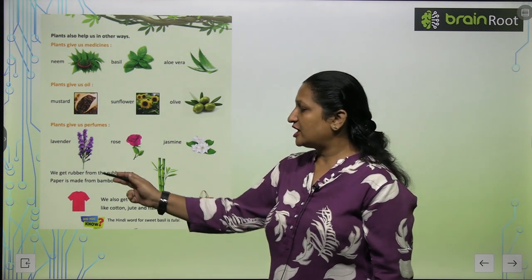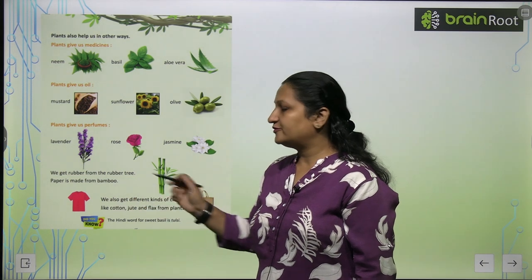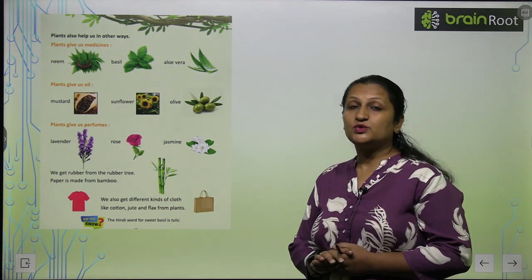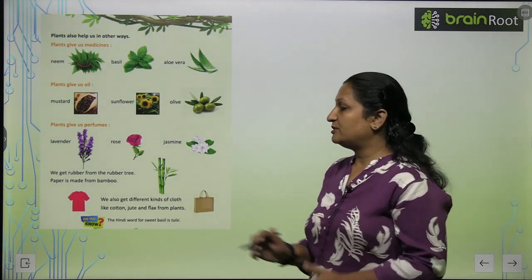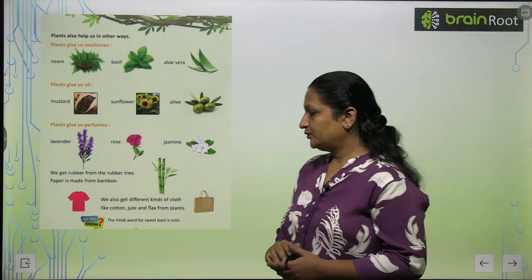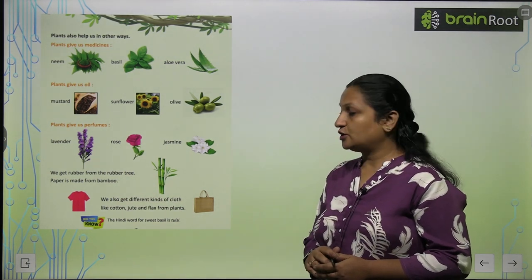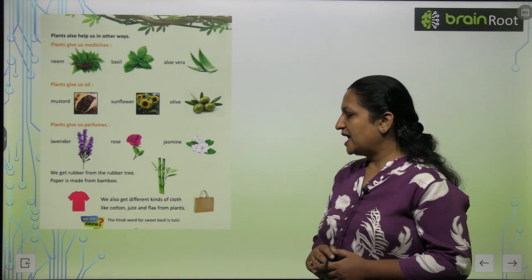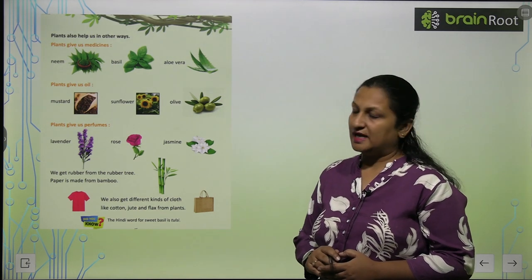We get rubber from the rubber tree. Paper is made from bamboo — the paper you use every day is made from bamboo. We also get different kinds of cloth like cotton, jute, and flax from plants.